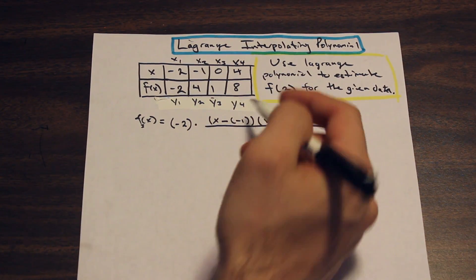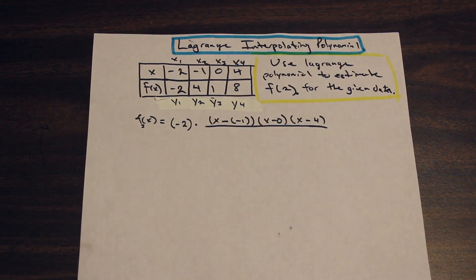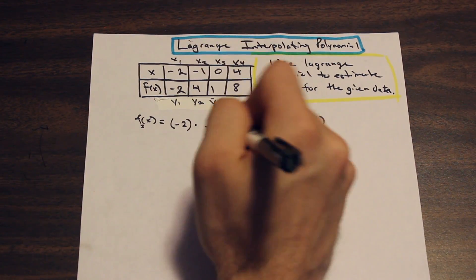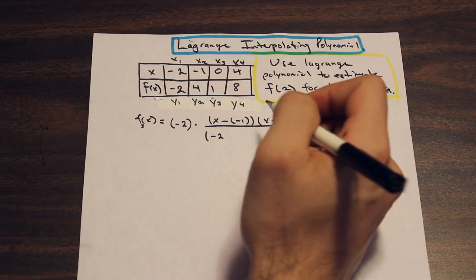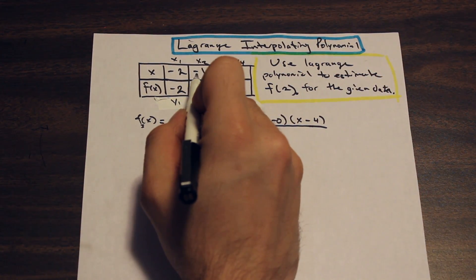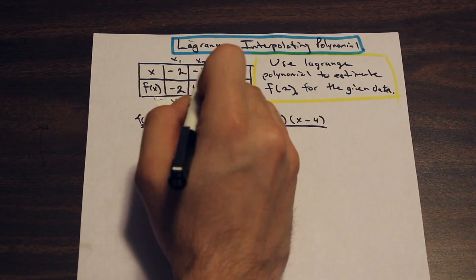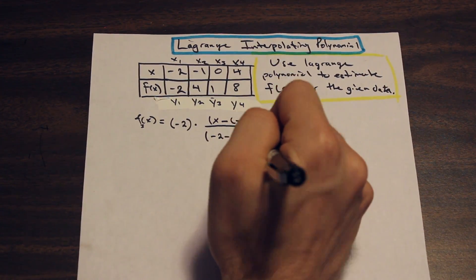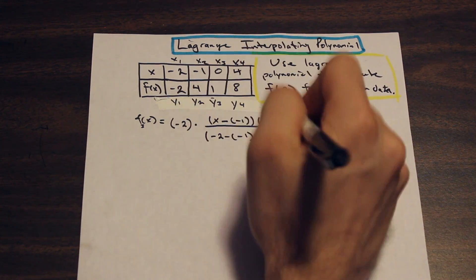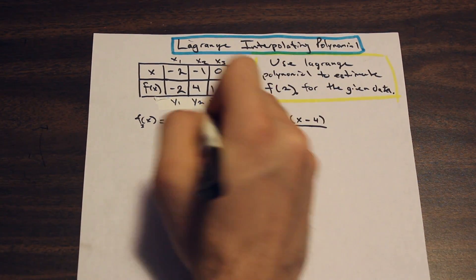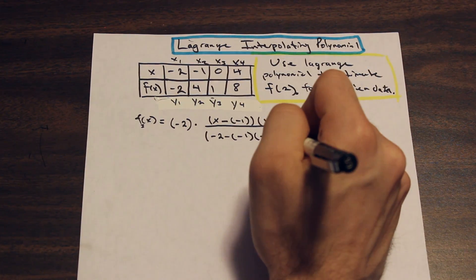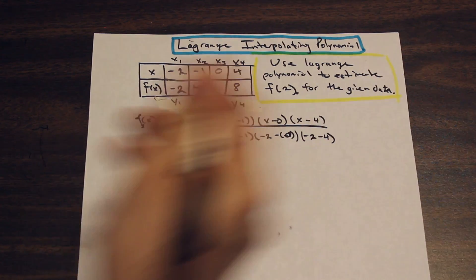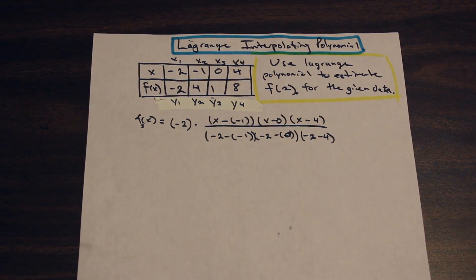Now for the denominator: we take the numerical value of x1, which is −2, and subtract by each x value that is not x1. So we have −2 minus (−1), minus 0, and minus 4. That's the complete first term of our Lagrange polynomial.